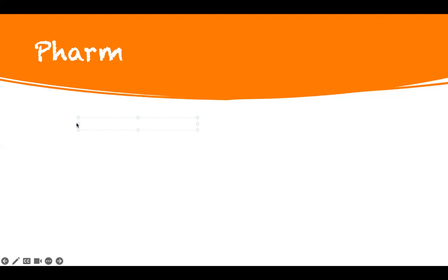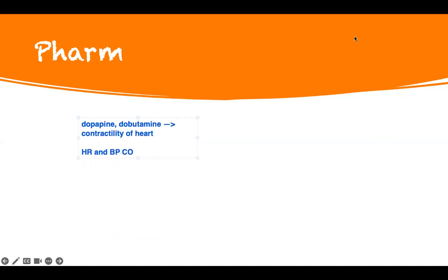For heart failure where we need to pump the heart, we use inotropes like dopamine and dobutamine - all they do is increase the contractility of the heart. The side effects are predictable: if you're making the heart pump faster, heart rate goes up and blood pressure can go up - so they become tachycardic. That's a brief pharmacology summary for heart failure.